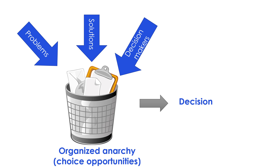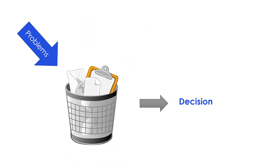The Garbage Can Model of Decision Making suggests that decision-making in organizations is a chaotic and unpredictable process, with decisions often made in a haphazard and ad hoc manner rather than through a rational and systematic process. To describe how decisions are made within organized anarchies, the model details four independent decision streams.